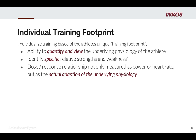If you think about what that footprint is doing and how it helps us individualize: it gives us the ability to quantify and view the underlying physiology of the athlete, which really helps us identify specific relative strengths and weaknesses — or as you'll see in the next lesson, a needs analysis of the athlete. And specifically, it allows us to do a much better job of tracking the dose and response. A coach or self-coached athlete prescribes training, the athlete goes through it, and now we can look at that response not only as power or heart rate data, but as the actual adaptation of the underlying physiology.